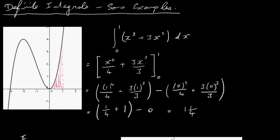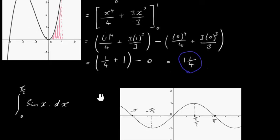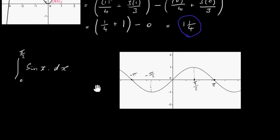So 1 and 1 quarter is our answer, and this is effectively the area underneath the curve between 0 and 1 and above the x-axis. That's the first question done.